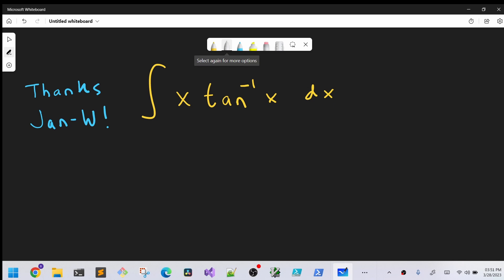The reason is we notice we have two functions here, and particularly we have this arctan, which is hard to integrate alone. So what we can do with integration by parts is we can differentiate that.